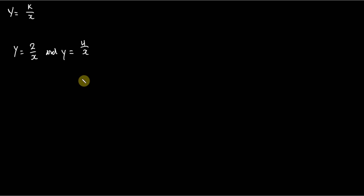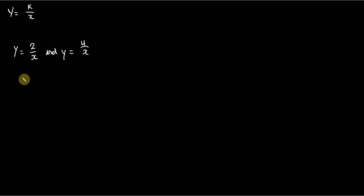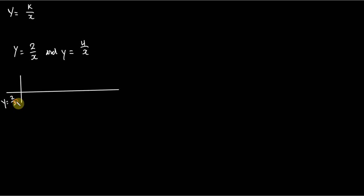The thing to understand from the outset is that we have type 1 graphs here, which are going to be in the first and third quadrant. We'll certainly see that when we sketch this graph. To see what's going on, one could create a table of values if you really wanted to.